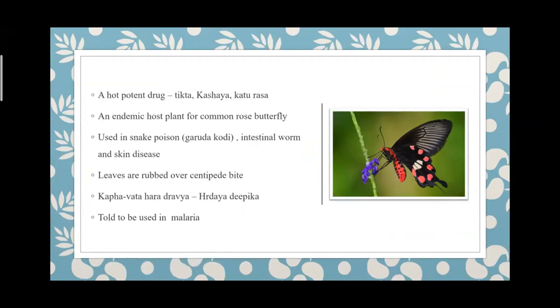It is a host plant for the rose butterfly. It is an Ushna veerya drug used for internal worms and skin diseases. It is said that keeping the root of this plant will prevent snakes from coming near. The root can calm the spread of snake poison, reducing the speed at which it spreads. It can also increase the heart rate.